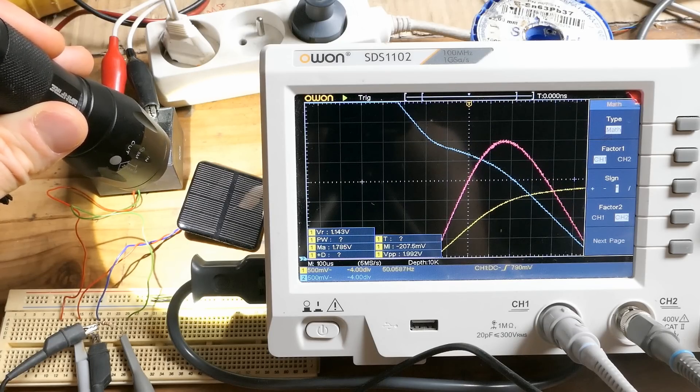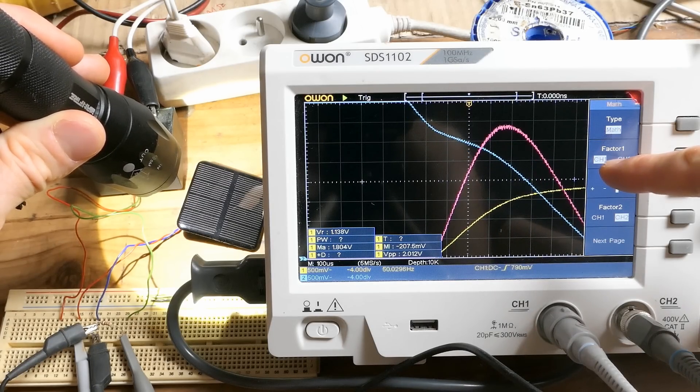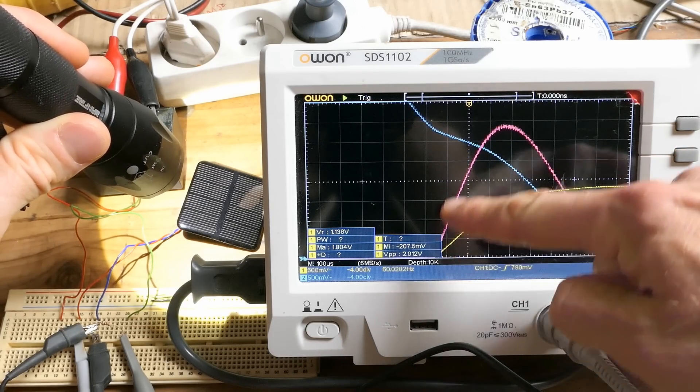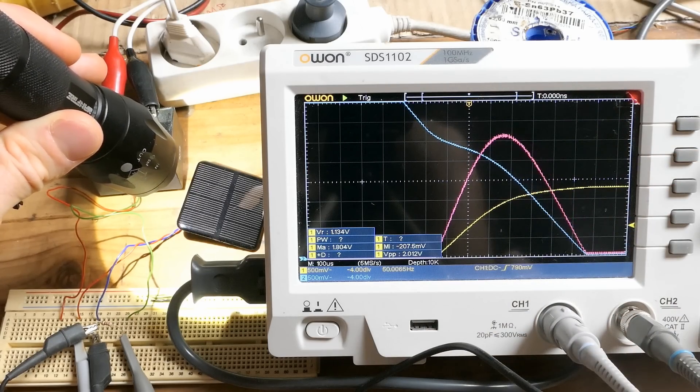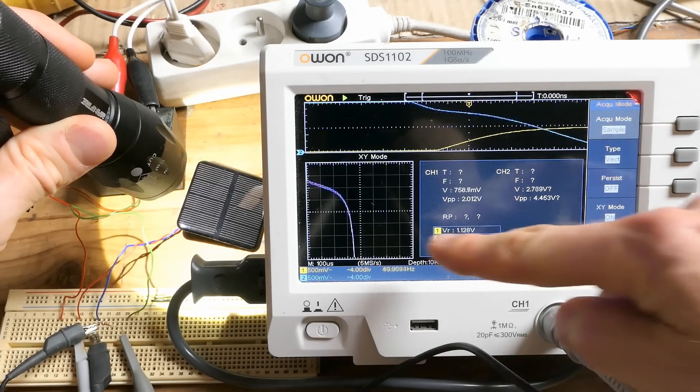And of course measuring the panel voltage and current, you can also display the voltage times the current. And this is basically the power. And here is the maximum power point. But unfortunately this is not visible in the XY mode.